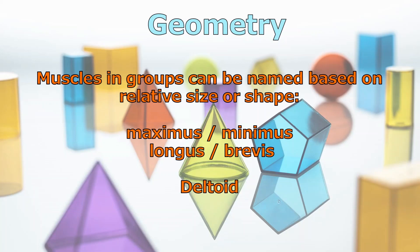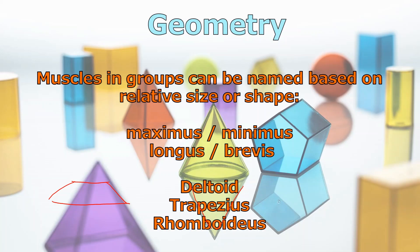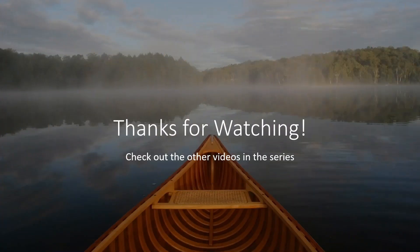Shape-wise, you could have something like deltoid — shaped like a delta, a triangular structure. A trapezius muscle would have a long side, a shorter side, and sloping angles to form a trapezoid. A muscle named rhomboid or rhomboideus would have a parallelogram shape — what we sometimes call a rhomboid. I hope you enjoyed some of those tips. We're going to work on actions in the next talk, so join me for that one. See you for the next one — bye!